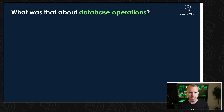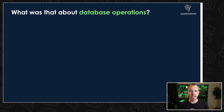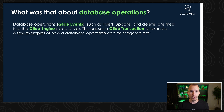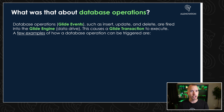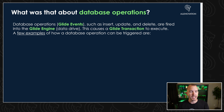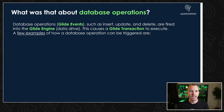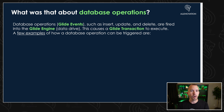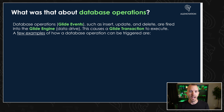What do we mean by database operations? A database operation, also known as glide events, is good terminology to get familiar with. Glide events such as insert, update, and delete are fired into the glide engine, which is a data driver. And this causes a glide transaction to execute.